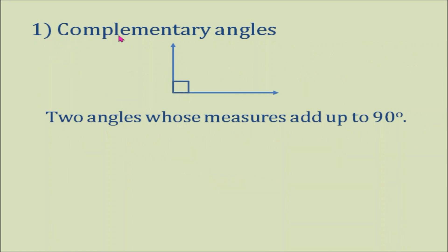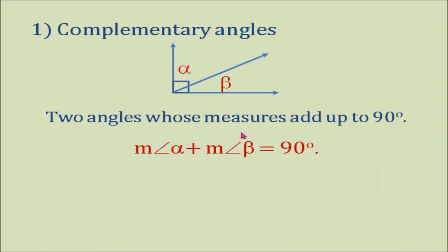Number 1: Complementary angles. They are two angles whose measures add up to 90 degrees. So here, we have two angles, angle A and angle B. The measure of angle A plus the measure of angle B equals 90 degrees. So angle A and angle B are complementary angles.